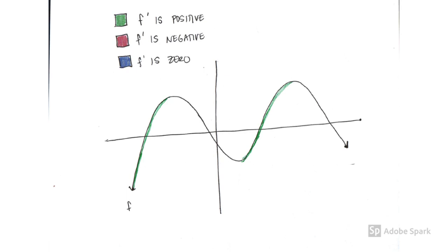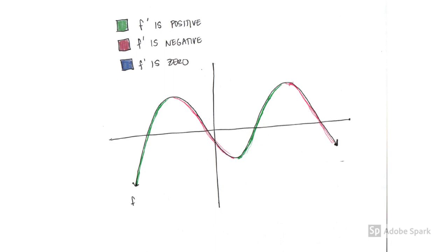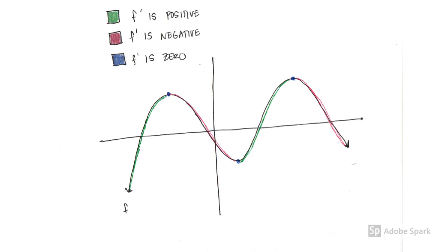Wherever the function is increasing, the derivative will be positive — I indicated that with the green line. And wherever the function is decreasing, the derivative will be negative because the tangent line will have a negative slope — I indicated that with the red line. And now I'm indicating where the derivative must be zero, because at all these hills and valleys the tangent line would be a flat horizontal line.